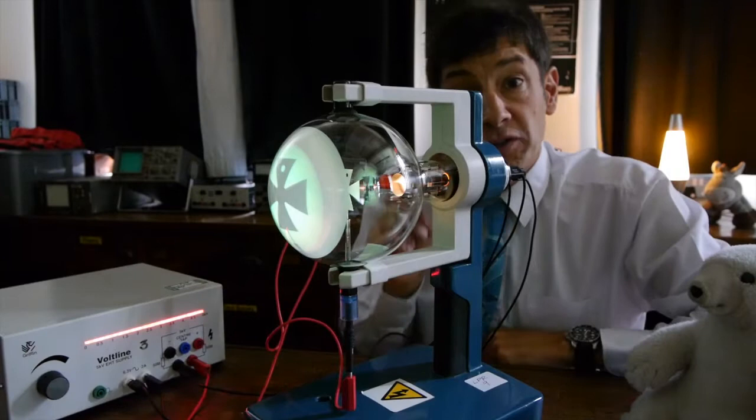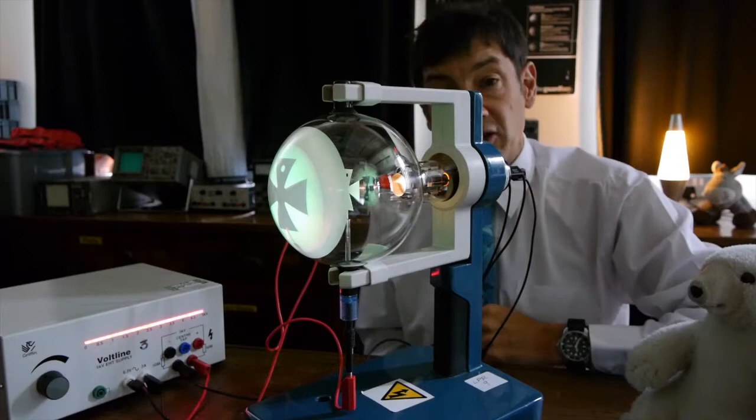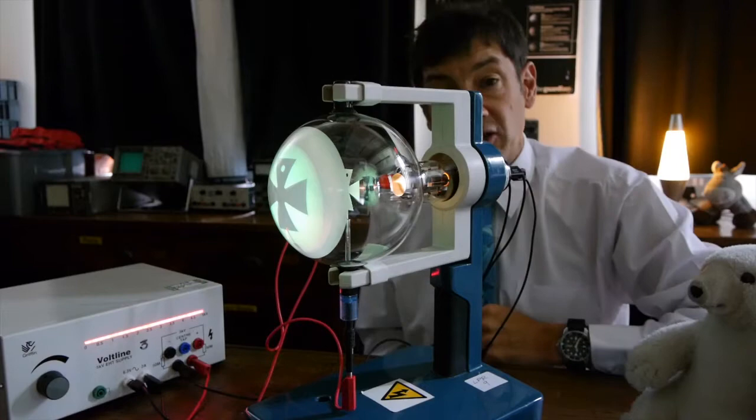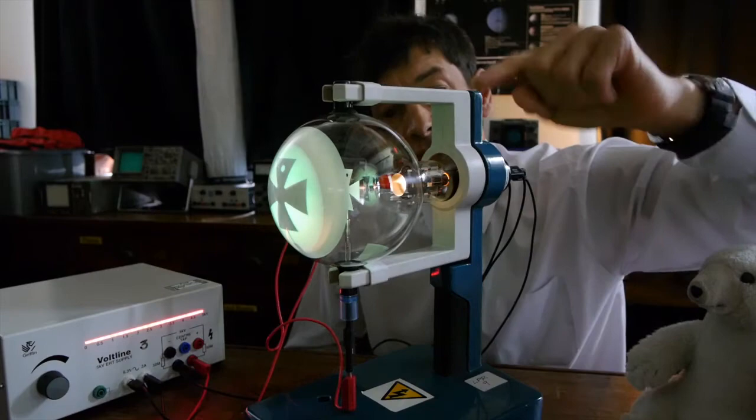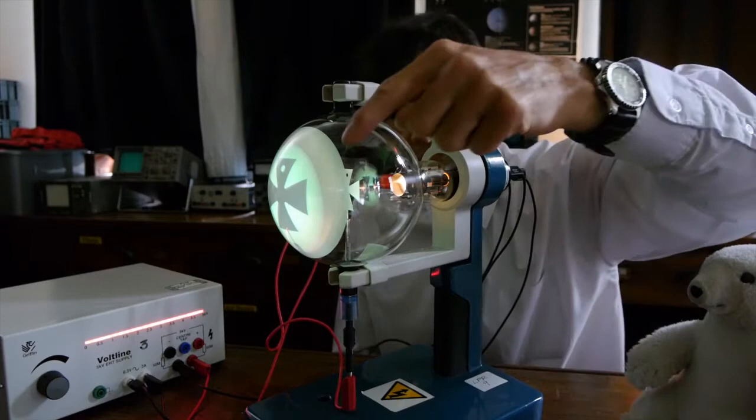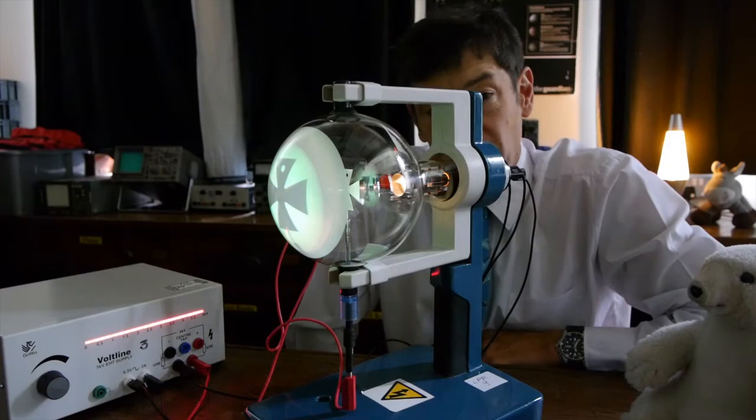The electrons hit the Maltese cross, which is made out of metal. And that's very positive. So it's attracting the electrons and accelerating them down the tube. But some of the electrons feel the electric field between the negative cathode and the positive Maltese cross anode and are travelling really fast. And they overshoot the Maltese cross. They go past it. Those are the ones that don't hit it directly. And they hit the front of the tube, release their kinetic energy as light on the zinc sulfide fluorescent screen.